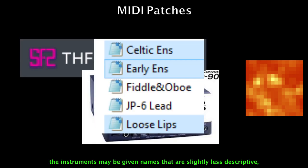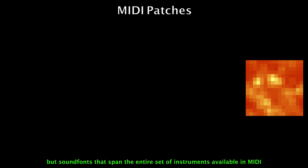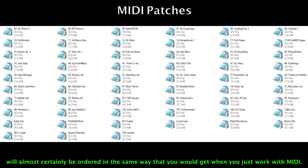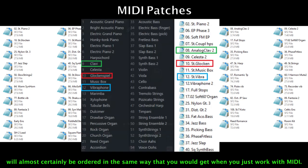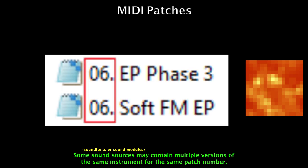If you're using a sound font or sound module, the instruments may be given names that are slightly less descriptive. But sound fonts that span an entire set of instruments available in MIDI will almost certainly be ordered in the same way that you would get when you just work with MIDI. Some sound sources may contain multiple versions of the same instruments for the same patch number.